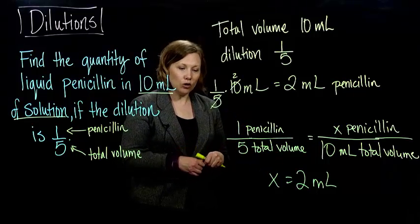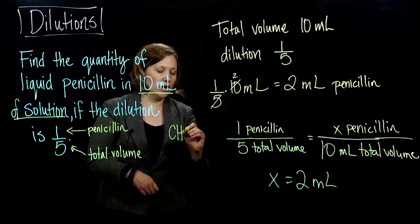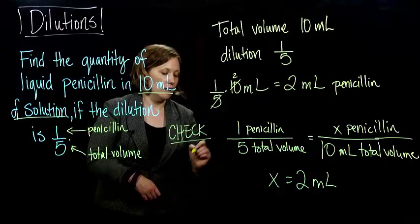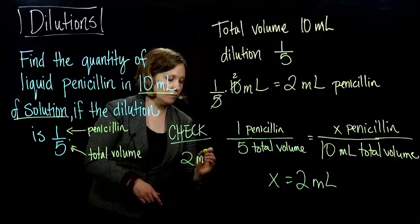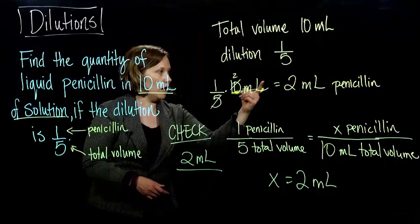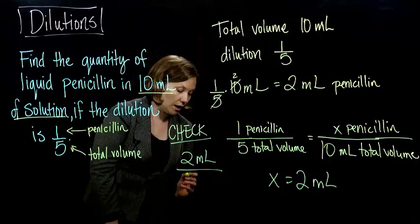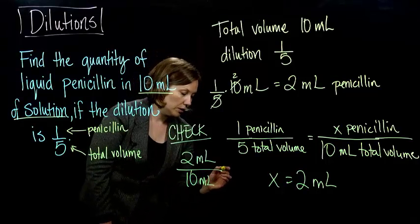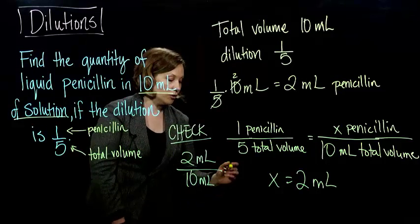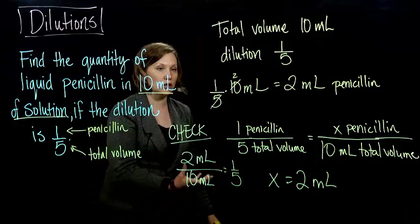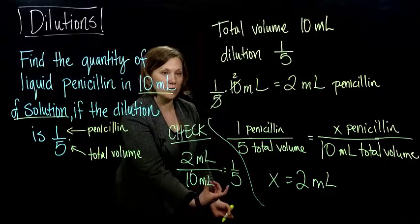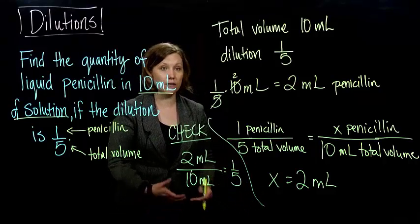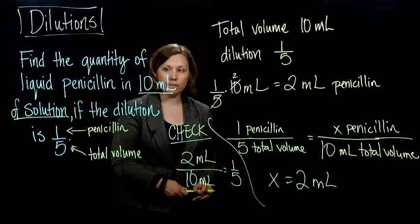Could you check your work? You bet. So remember, you can always check your dilutions by taking the amount you got for your concentrate that you're going to mix in and put that in the top, and your total volume goes in the bottom. And when you reduce that fraction, you should get the same as what your dilution is if you did it correctly. So that's it. Thank you.